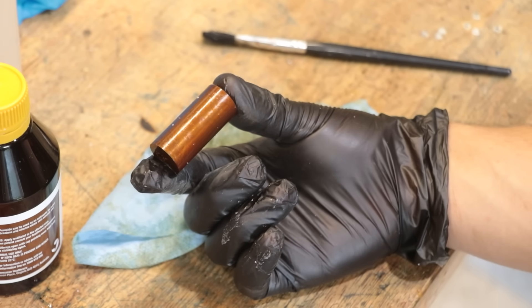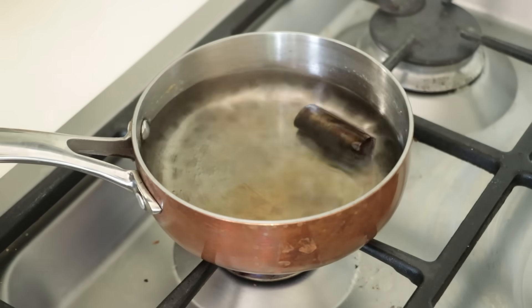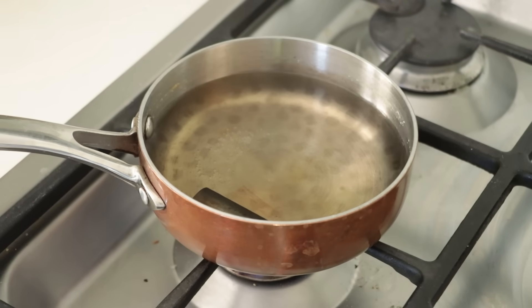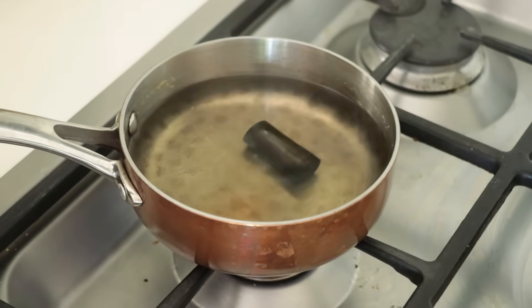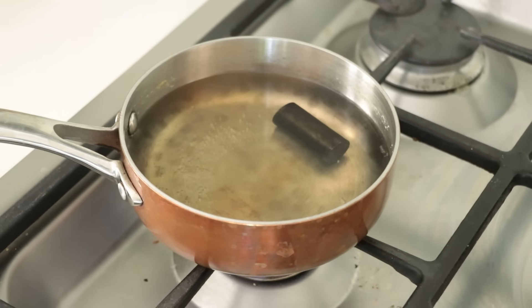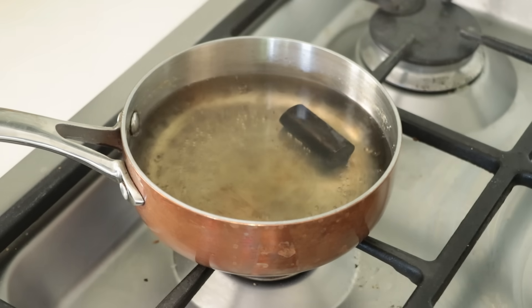Once the part is all rusted up, I'll drop it in a hot pot of boiling water. This will only take a minute or so, but what's happening here is the rust or iron 3 oxide is going to be converted into magnetite. It is still a form of iron oxide, but it is one that is a lot more stable than iron 3 oxide. And much like the cold blue, it's porous and able to retain oil to give us that rust protection.